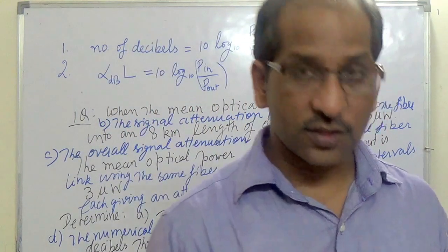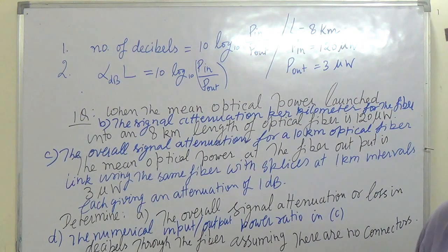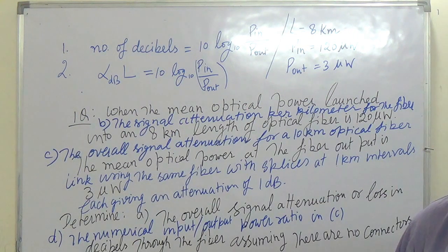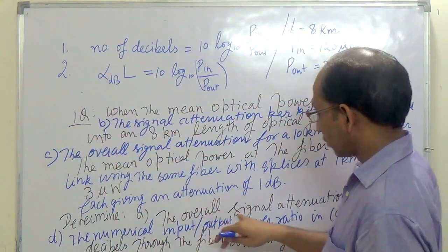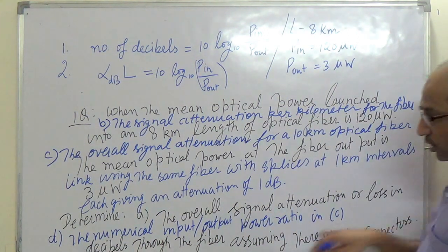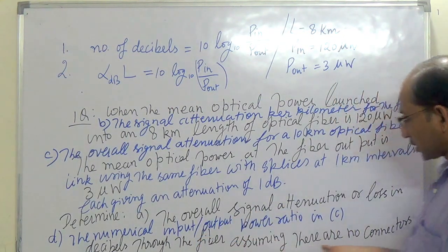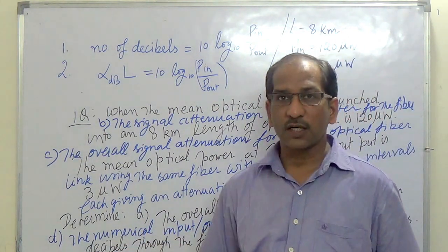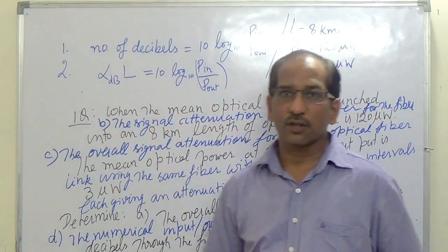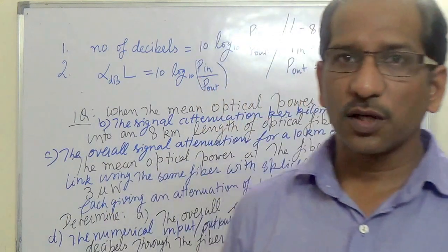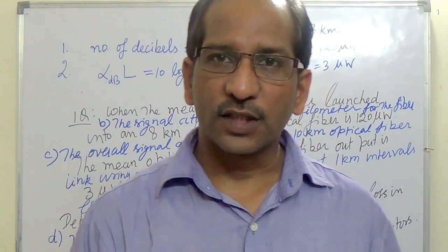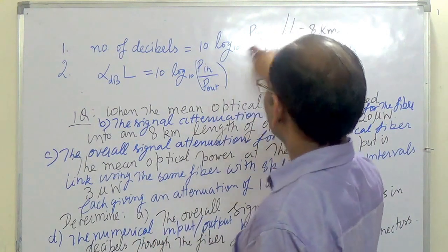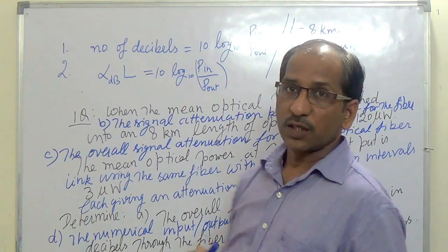For Part A, we have to determine the overall signal attenuation or loss in decibels through the fiber, assuming there are no connectors. For the first part we use formula number 1, because from formula number 1 we determine the overall loss in the signal for the given optical fiber. The values given are P_input and P_output.